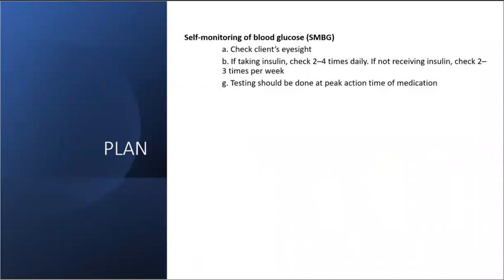In terms of self-monitoring blood glucose, you want to check your client's eyesight to make sure they can see directions and read results. Check expiration dates on test strips. If the client is taking insulin, they want to check two to four times per week. If they are not receiving insulin, check two to three times per week. Keep a logbook of results and testing should be done at the peak action time of medication.